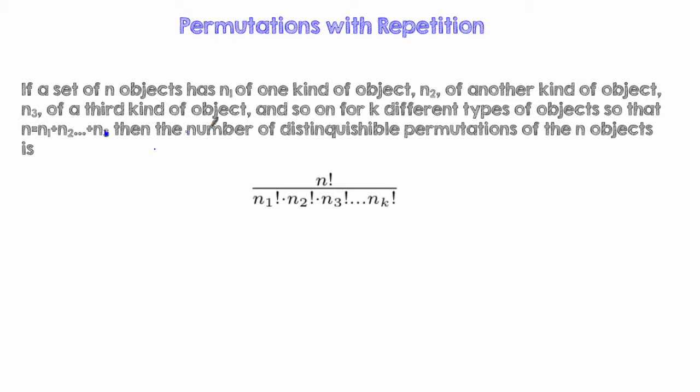And so then the number of distinguishable, that is the number of different non-repeating permutations, would be the following: n factorial over n sub 1 factorial times n sub 2 factorial times n sub 3 all the way to n sub k. That's our definition.